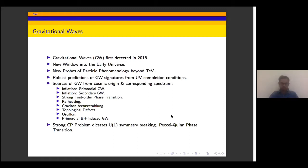There are many sources of gravitational wave of cosmic origin. There can be primordial gravitational wave, secondary gravitational wave induced by first order scalar perturbations, then phase transitions, reheating, graviton radiation from cosmic strings, topological defects, and many more. And the strong CP problem, which has a U(1) symmetry, also dictates we have some kind of Peccei-Quinn phase transition.